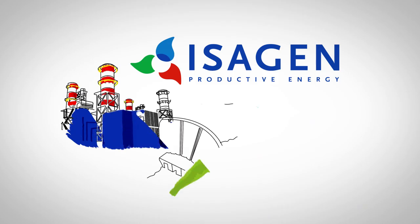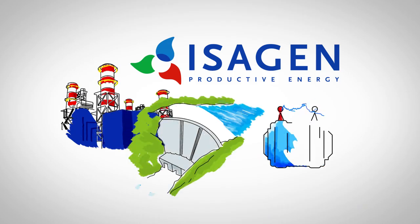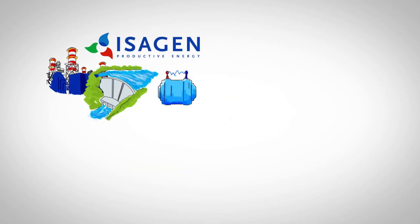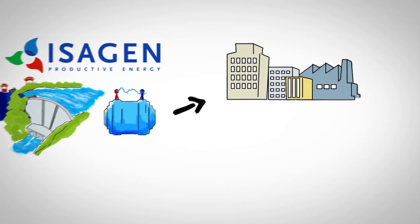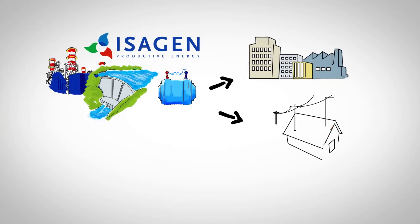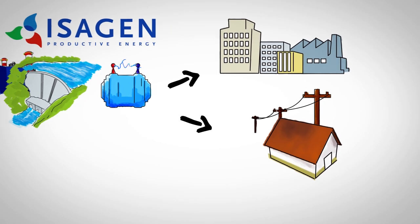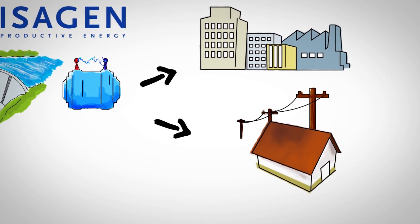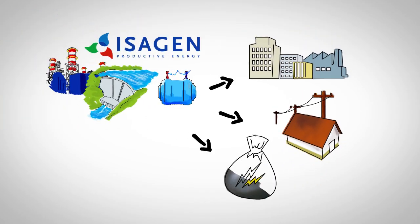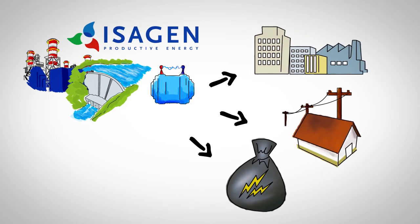At Isahen, we participate in the whole process, generating energy in the power plants and selling it directly to big industry buyers that consume large quantities of energy. We also sell energy to electric companies that then sell it and transport it at a low voltage to consumers. Another important part of our business is trading in the wholesale electricity market.